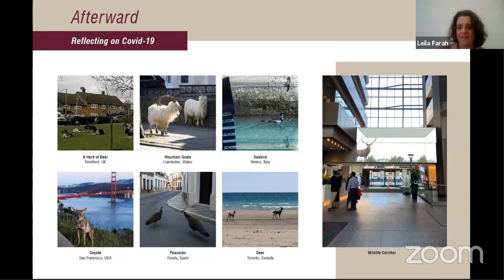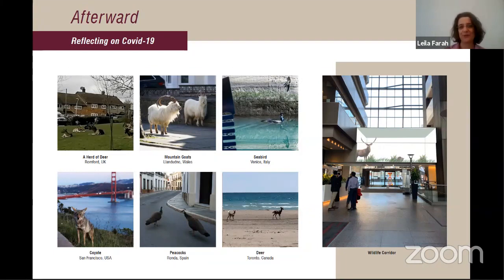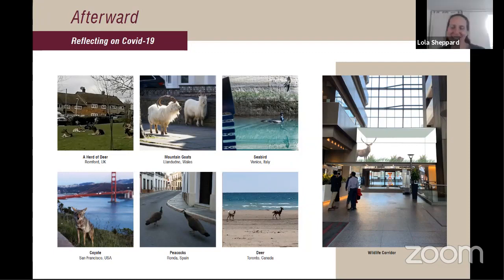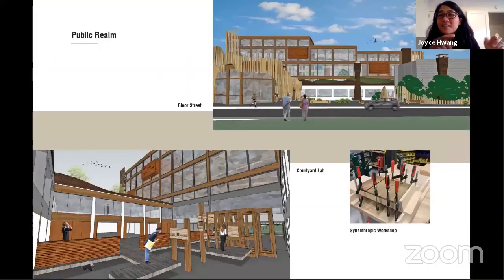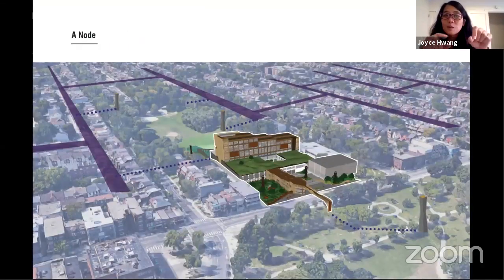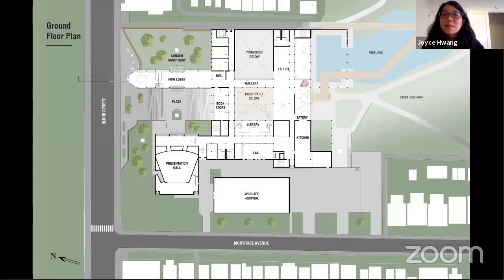Thank you very much, Simon. If there's any question for clarification, maybe that would be the time now to ask, and then we can start with our guests, either Joyce or Lola. I'm wondering if you could go back to something like an overall axon of the project and just point out what all the spaces are, because you sort of did the axon and then there's all these great renderings of scenarios. If you could say within the overall context where those spaces are — and related to that, what is the program of the building? Is this a kind of urban zoo? Is it a research centre?